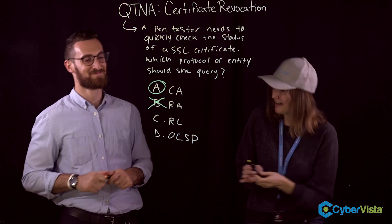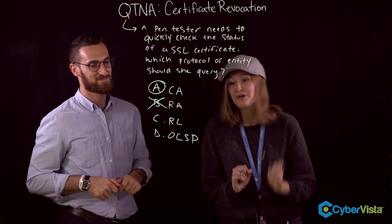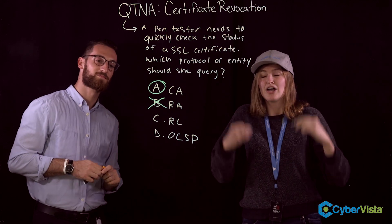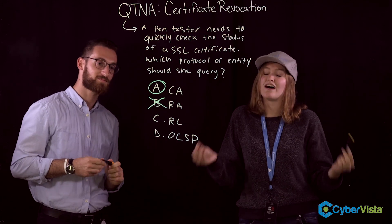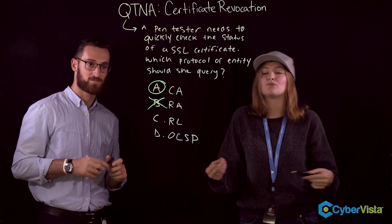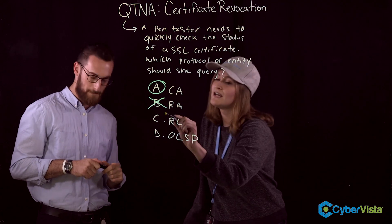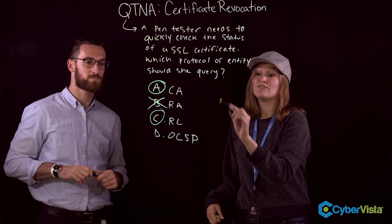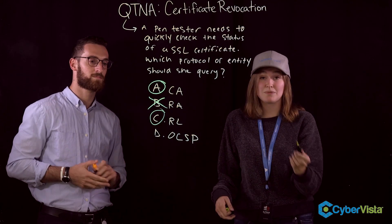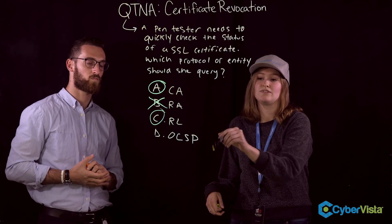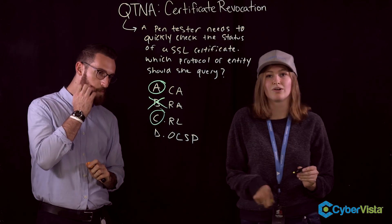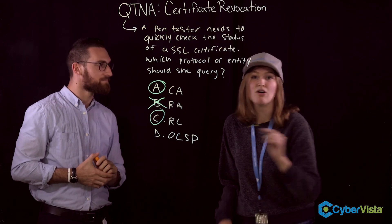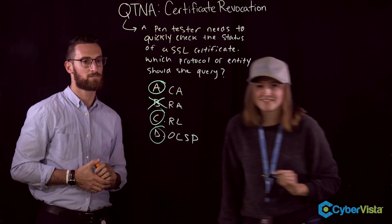The CRL, as the cool kids call it — it's sort of like a blacklist of issued certificates that have been revoked or expired, so that would definitely help us. And then D, we have the OCSP, which is the Online Certificate Status Protocol. Basically the same as the CRL, but it's online.